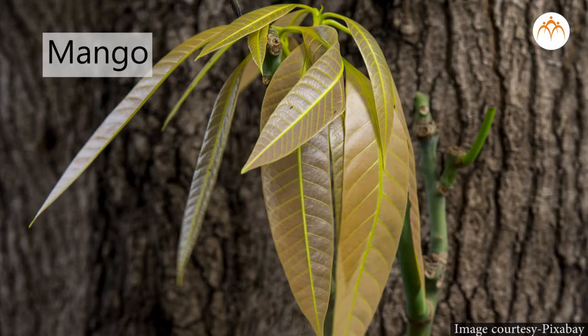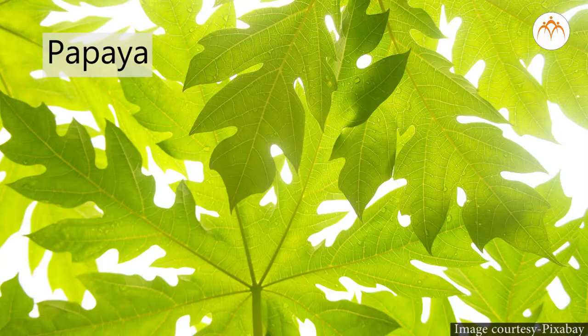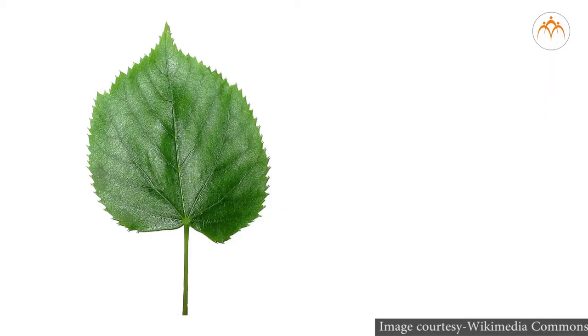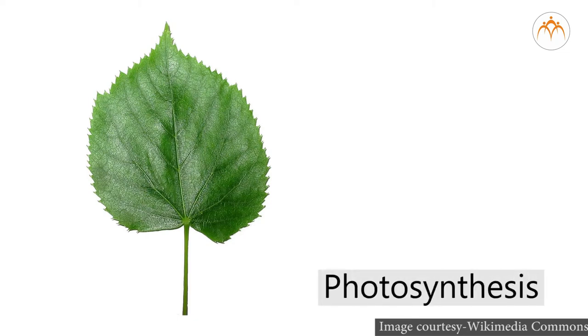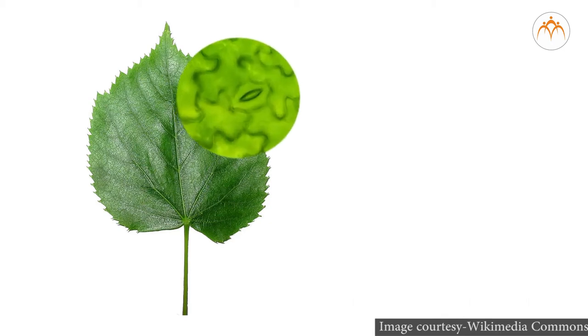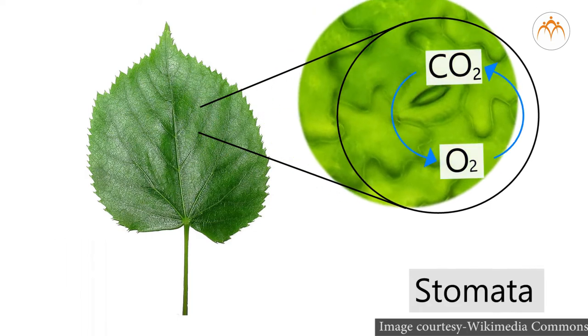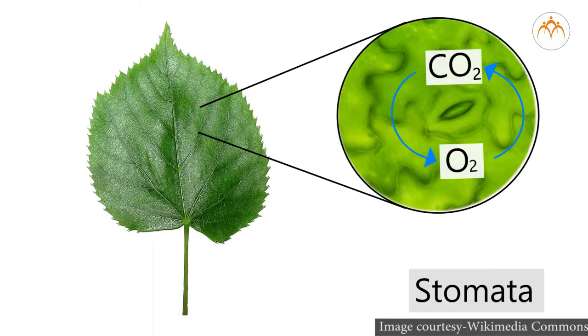Observe plants around you — they occur in a variety of shapes and sizes: mango, tamarind, papaya, oak, banana, palm. Why are leaves produced by plants? What is their role? Leaves produce food by the process of photosynthesis. There are minute pores on the leaf through which carbon dioxide and oxygen are exchanged — these pores are called stomata. Pores on leaves also lose water vapor.